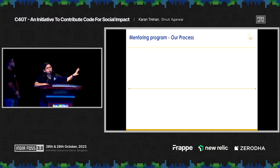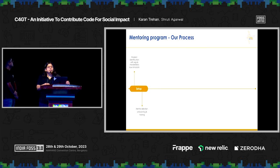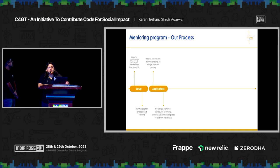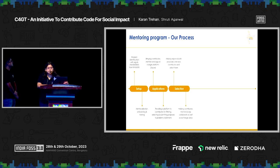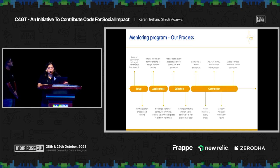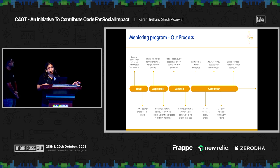The mentoring program follows a timeline. First is the setup phase, where organizations post their tickets, issues, and problem statements. Second is the application phase, where contributors explore open source projects, prepare proposal documents, and submit them. Third is the selection phase, where organizations shortlist the top proposals. Fourth is the contribution phase — the largest — where contributors actually write code, and one line of code can impact billions of lives on these population-scale projects.